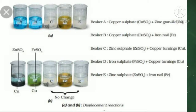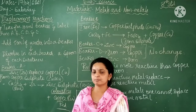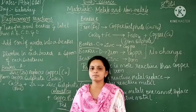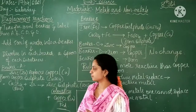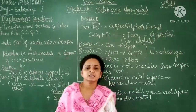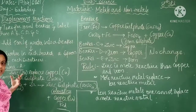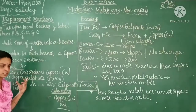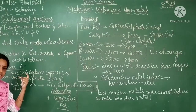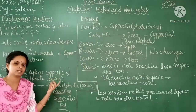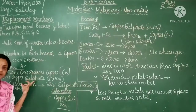Dissolve in each beaker a spoon of each substance — different substances in each of the five beakers. What reaction will occur? Don't disturb the beakers; keep them without any disturbance. Then after some time, when the reaction stops, observe and note down from beaker A — the zinc substance is present. When zinc is placed in copper sulphate solution, what will be formed? Copper sulphate will be formed — the metals can replace another metal.